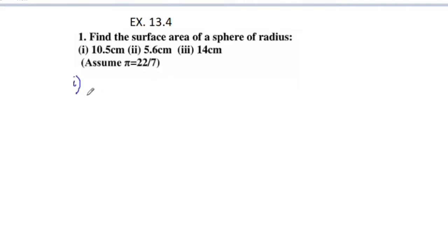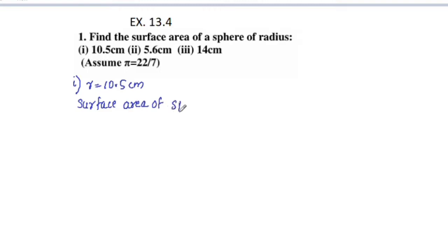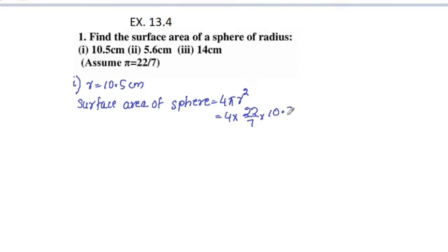Radius is equal to 10.5 cm. Surface area of a sphere is equal to 4 pi r squared. Substituting the values: 4 into pi (22 by 7) into r, where r is 10.5, so 10.5 into 10.5.